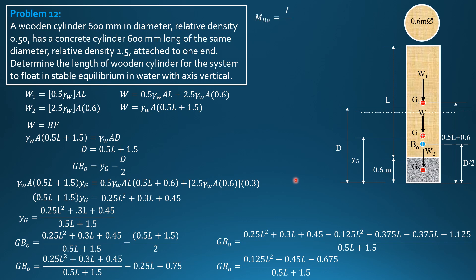Next, MbO, which is I over volume displaced. Momentum inertia is pi over 4 times 0.3 to the fourth for circular waterline section, divided by area pi 0.3 square times draft, which is 0.5 L plus 1.5. Simplifying, 0.0225 over 0.5 L plus 1.5.